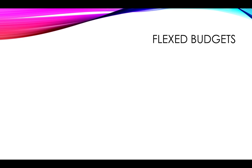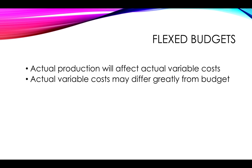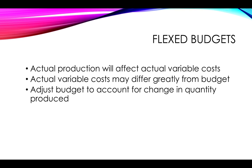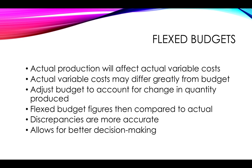Flexed budgets take into account the fact that actual production will affect the actual variable costs. Sometimes what will happen is the actual production is not the same as that which was planned. This means that the variable costs that are actual will vary greatly from those that were budgeted. To be more realistic, you need to be able to adjust your budget to account for a change in the quantity of units produced. In other words, a flexed budget will take into account any changes in the quantity produced and redraw your variable costs based on that, so that you have a new budget for those variable costs. You can then compare them to the actual figures to get more realistic, more accurate discrepancies. This will allow for better decisions.